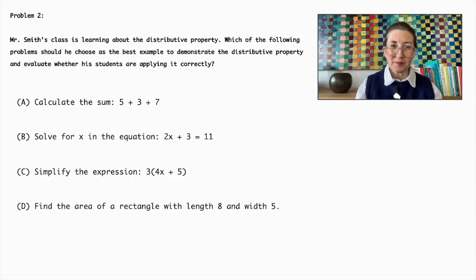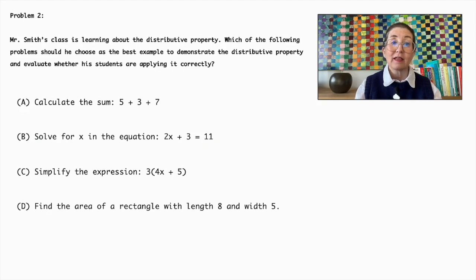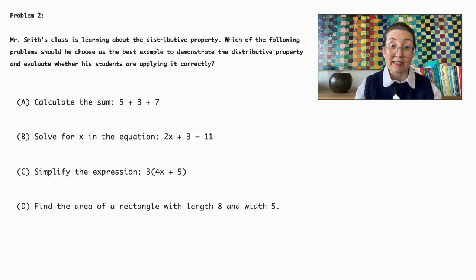Problem number two. Mr. Smith's class is learning about the distributive property. Which of the following problems should he choose as the best example to demonstrate the distributive property and evaluate whether his students are applying it correctly? Option A: Calculate the sum 5 plus 3 plus 7. Option B: Solve for x in the equation 2x plus 3 equals 11. Option C: Simplify the expression 3 times the quantity 4x plus 5. Option D: Find the area of a rectangle with length 8 and width 5.